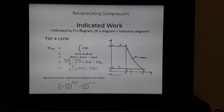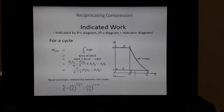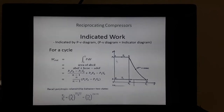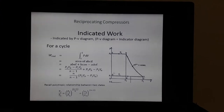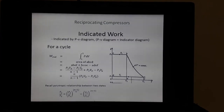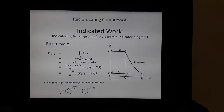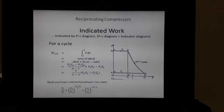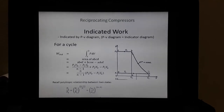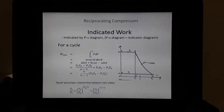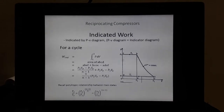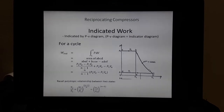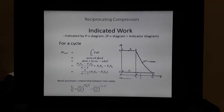Now let us discuss the indicated work, or indicated power — the expression for indicated work or indicated power. D-A-B-C is one cyclic process, and for this cyclic process work equals the integral of P dV. This work is the area A-B-C-D. The same area A-B-C-D can be written as: area A-B-E-F plus area A-B-C-O-E minus area A-D-O-F.